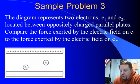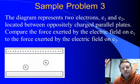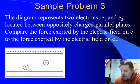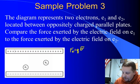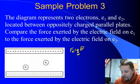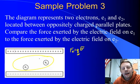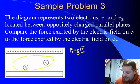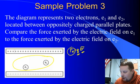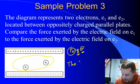Here we have a diagram showing two electrons, E1 and E2, located between oppositely charged parallel plates. It asks us to compare the force exerted by the electric field on E1 to the force exerted by the electric field on E2. Well, once again, the electric force is equal to charge times electric field strength. Our charges are the same because they're both electrons and our electric field strength is the same because the electric field strength is constant between two parallel plates. So, if Q is constant and E is constant, our force must also be constant. Therefore, it is the same.